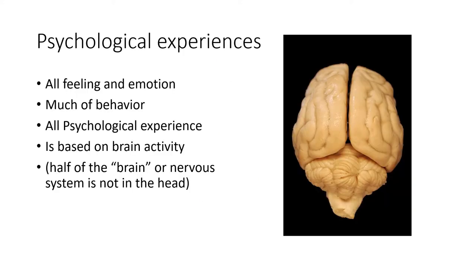When we talk about psychological experiences it's important to note that all feelings and emotions, much of our behavior, all psychological experiences are based on brain activity. It's important to note that brain activity — half of your brain or nervous system — is not in your head. Throughout your body there are nerve cells. There are nerve cells that wrap around your stomach and your intestine. So when we say that someone makes us sick to our stomach, we actually have nerve cells there that constrict and cause that discomfort. When you say someone is a pain in the neck, if you reach up and touch those muscles in your neck you will find they have tightened up. So we will look at how emotions and the body and the brain interact.